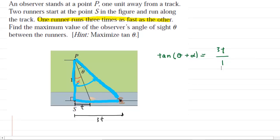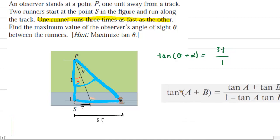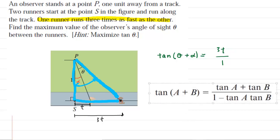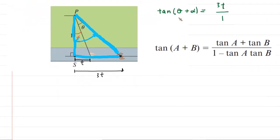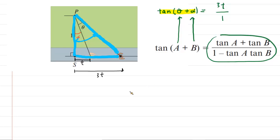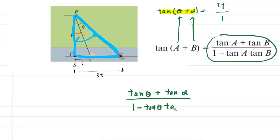To simplify the left side of this equation we're going to need to introduce this identity, which you may have learned about in a pre-calculus course. In this case capital A represents theta and capital B represents alpha. Following this identity, we can rewrite the left-hand side: tangent of theta plus tangent of alpha, all over 1 minus tangent of theta times tangent of alpha. And this is still equal to 3t over 1.